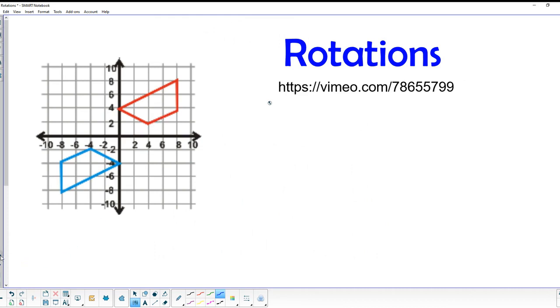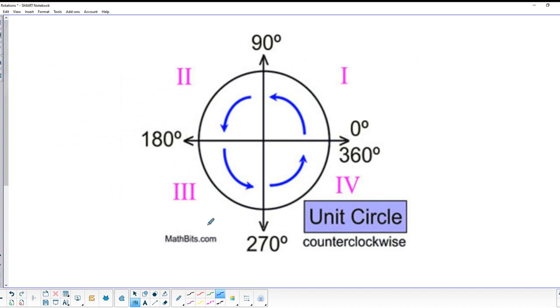If we rotate something around the origin of a coordinate system, we have to remember this circular diagram. The positive x-axis is called the zero degree line. When we start rotating it, if we rotate it up to the point where it's pointing straight up, we have created a right angle. So that's a 90 degree rotation.